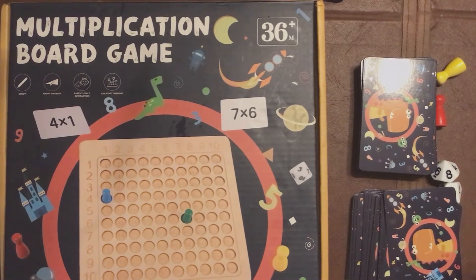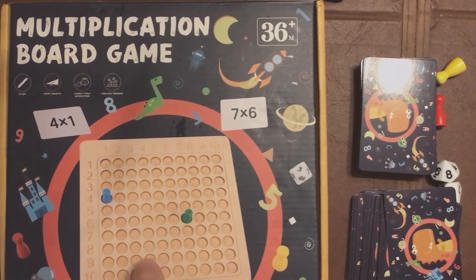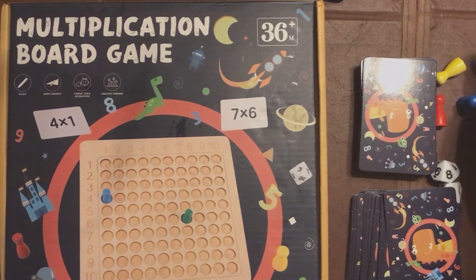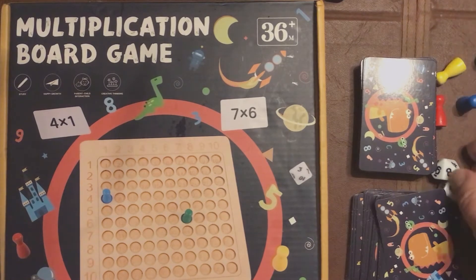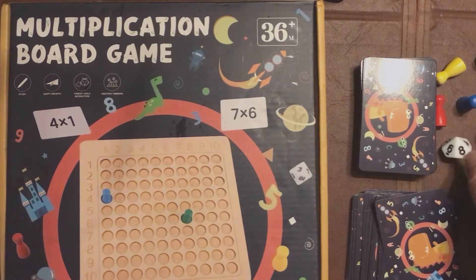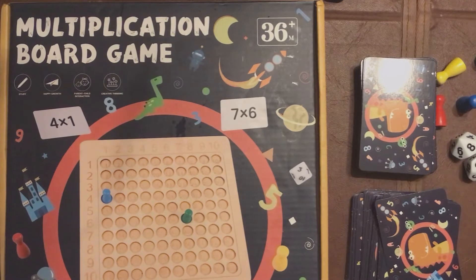You can see what we've got here. We've got a board, a couple of packs of cards, some tokens to move around, a set of unusual dice. These are ten by ten, ten-sided dice.